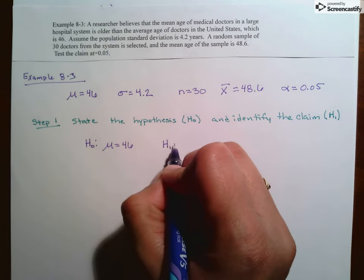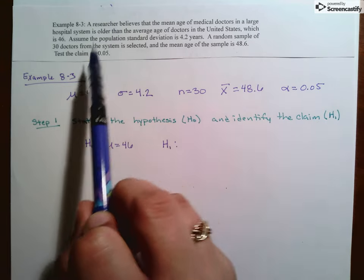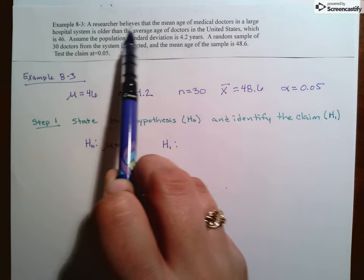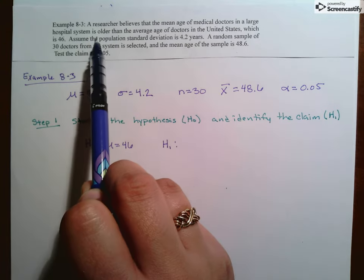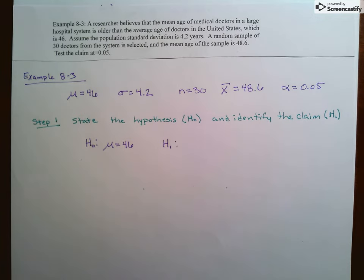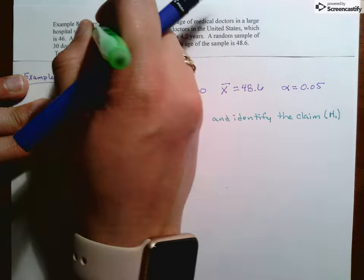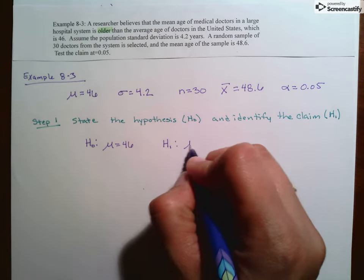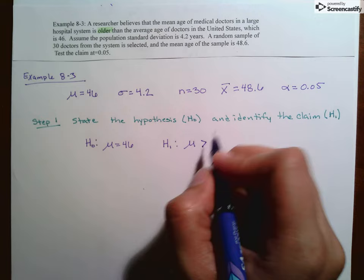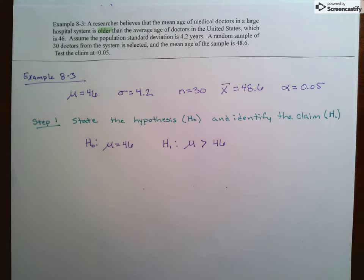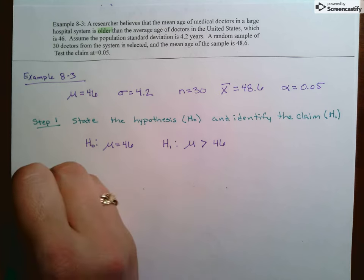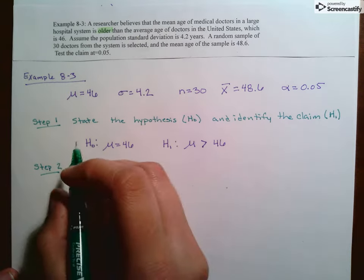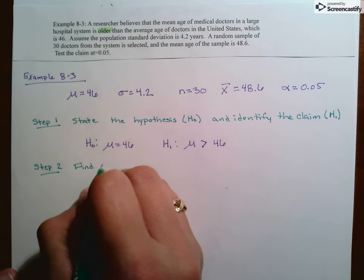Then our alternative hypothesis. Let's read this. So we look for the claim. A researcher believes the mean age of a medical doctor in a large hospital is older. So that's our keyword, older. So since they're older, that means he's saying the mean is greater than 46. So it's important for this because this tells me that we're going to have a one-tailed test and it's going to be a right-tailed test.